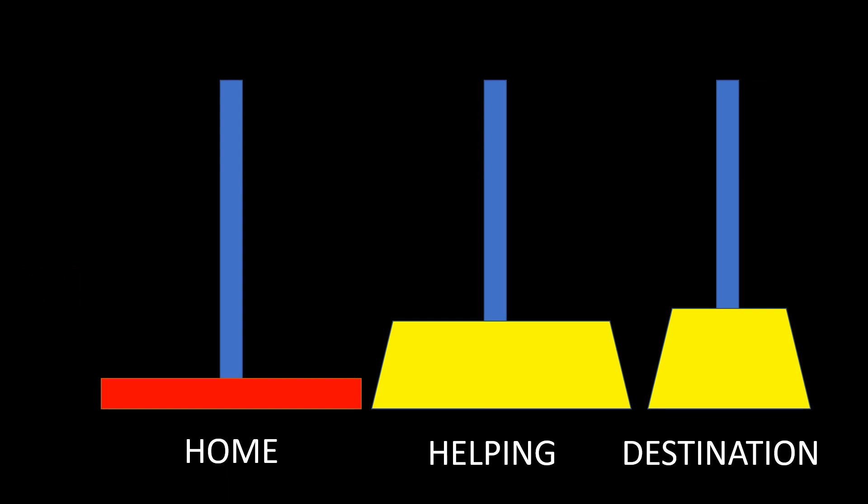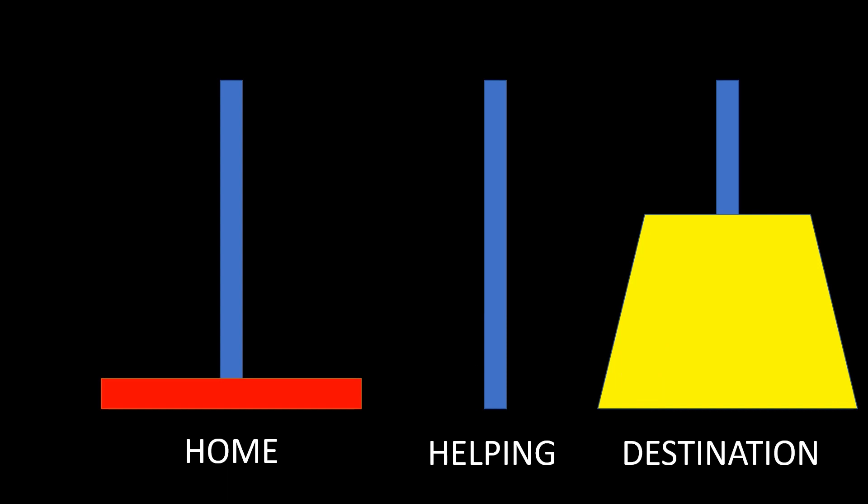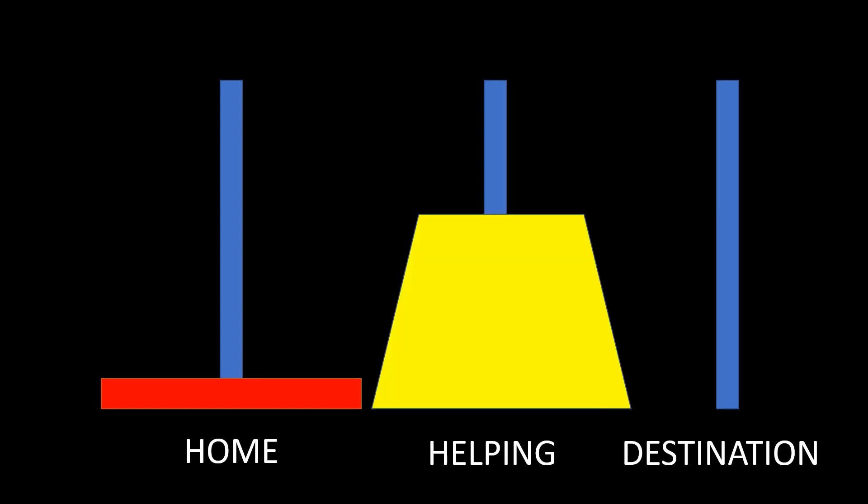We could move some disks to the helping stack and some to the destination stack, but then the largest disk would have nowhere to go because the top disks in both stacks would be smaller. If we move all smaller disks to the destination stack instead, the largest disk could move to the helping stack, but that would be inefficient since the largest disk ultimately needs to reach the bottom of the destination stack. So the last option is to move all n minus one disks to the helping stack.